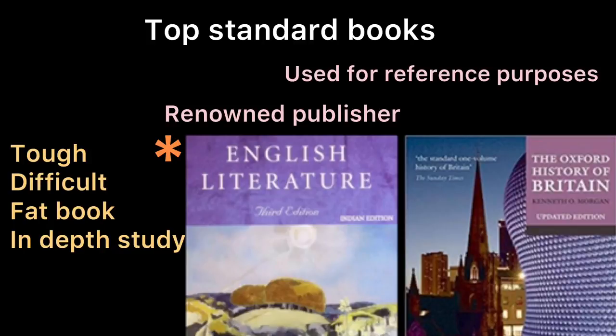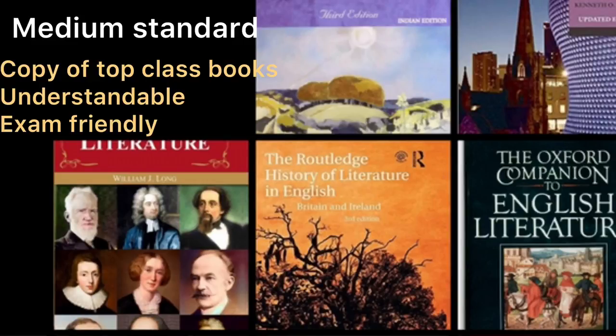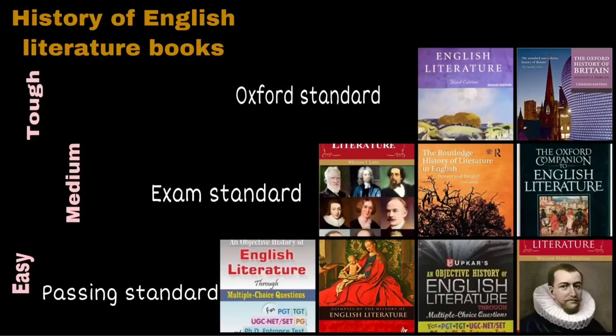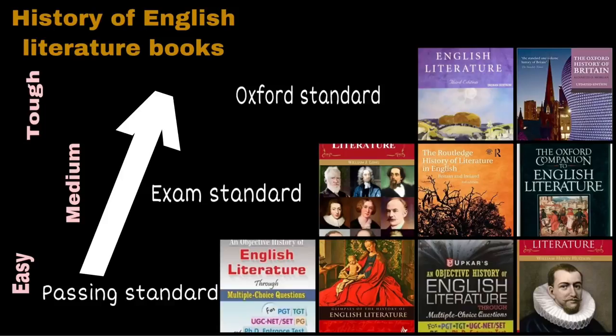Specially on history of English Literature, so I'm here. Any subject with any course has three kinds of books. First is the Oxford-Cambridge standard books — the most detailed, difficult, and bulky books. Second is the medium standard books, understandable by a single or couple of readings — I suggest my juniors follow this category for college, university, or entrance exams. Third is the easiest ones, mostly in short and MCQ patterns. Go from the easiest to the toughest for better understanding.